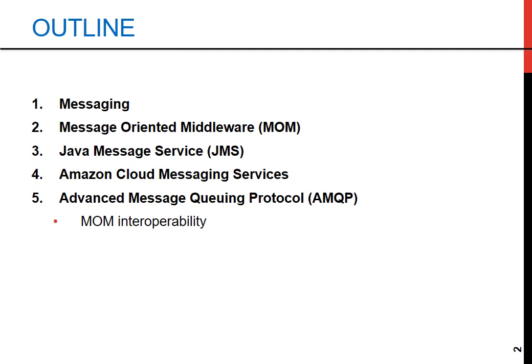Next we'll examine the Java messaging service, JMS. This is a key API for implementing messaging in Java applications. We'll also look at Amazon's cloud messaging services as an example of cloud-based services to see how cloud-based solutions are transforming messaging infrastructure. Finally we'll discuss AMQP, the advanced message queuing protocol, and the importance of middleware, highlighting how different messaging systems can work together seamlessly.